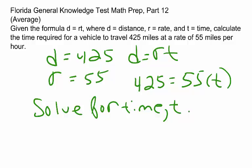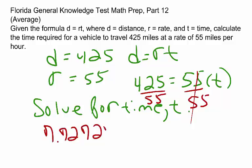So this is a pretty straightforward algebra problem. To solve for T, we need to divide both sides of the equation by 55. And using your calculator, you should get 7.727, and it repeats 27.